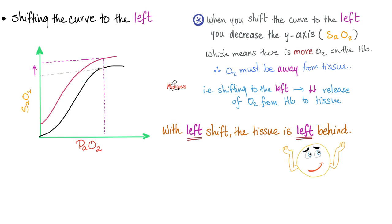But when you shift the curve to the left, the black one is original and the red one is shifted to the left. Take the same point from the x-axis and go upwards. Intersect with the original one and the one shifted to the left. As you see, when you shift to the left, you increase the SaO2. Translation: when you shift to the left, there is more oxygen in the hemoglobin, which means more loading, less unloading. Oxygen is going to the hemoglobin and therefore away from the tissue. Thus, with left shift, the tissue is left behind.